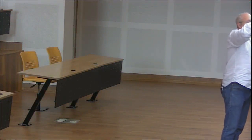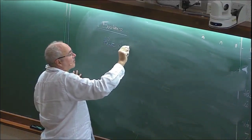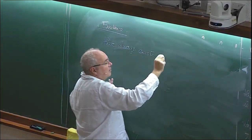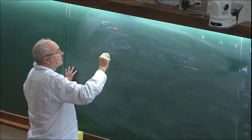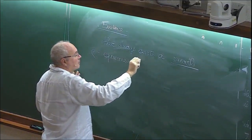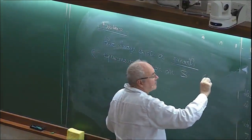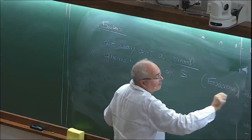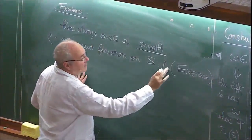For existence: there always exists a smooth ρ-equivariant function on X̃ — this is a topological fact related to ℝ being contractible. Call it f. The goal is to deform f to a harmonic function.